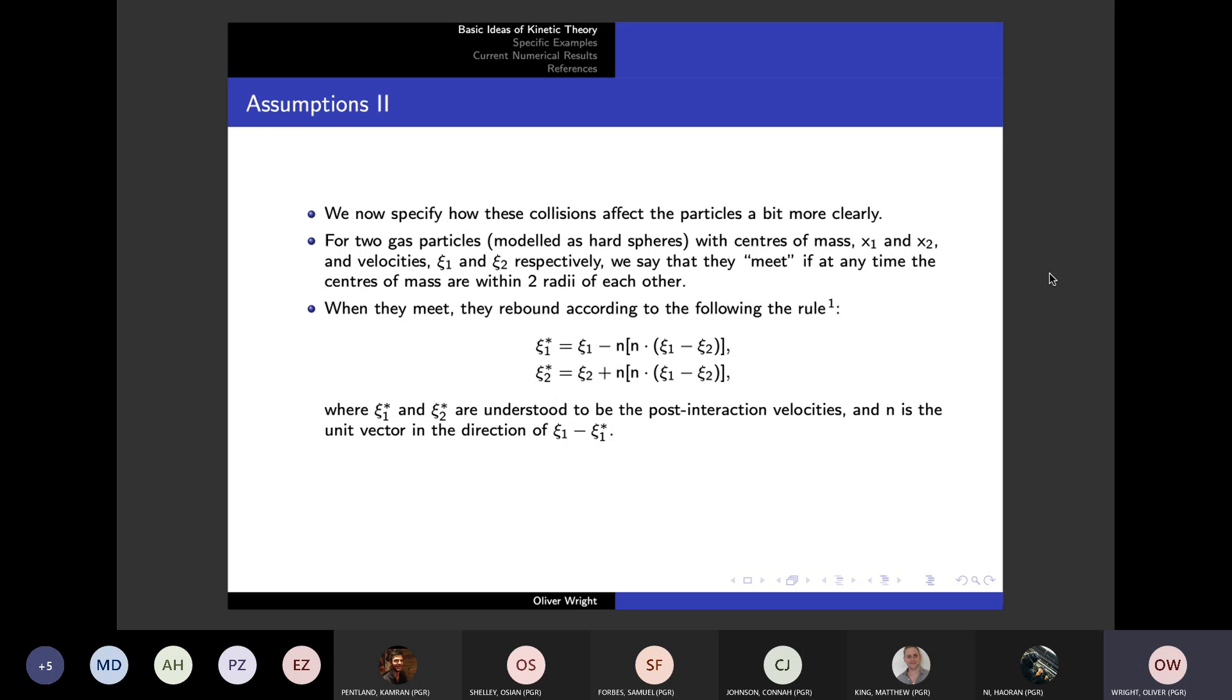When they actually meet, we have them rebounding according to this rule, bouncing off each other, where the Xi_1 star and Xi_2 star are the post-interaction, post-collision velocities. It's important to note that in this situation, these represent repulsive interactions between individuals.